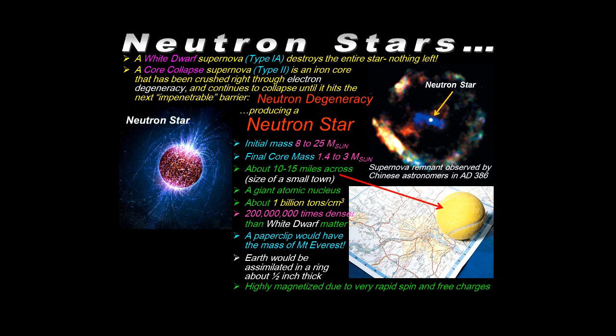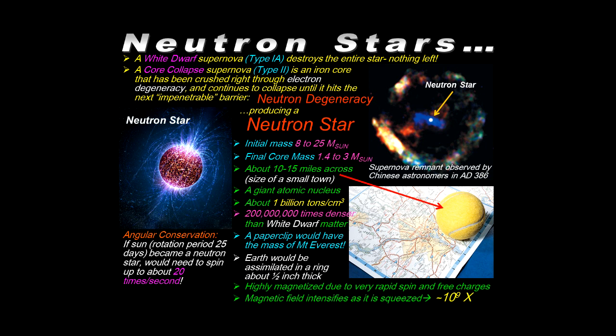The magnetic fields associated would be highly concentrated. It's spinning very rapidly. Angular conservation means that if an object like the sun became a neutron star, which it won't because it's too small, they would have to go from the current 25-day rotation period down to about 20 times per second. And this rapidly increased rotation rate causes the magnetic field intensities to be squeezed down and amplified by a factor of approximately a billion. So that's the basics of a neutron star.